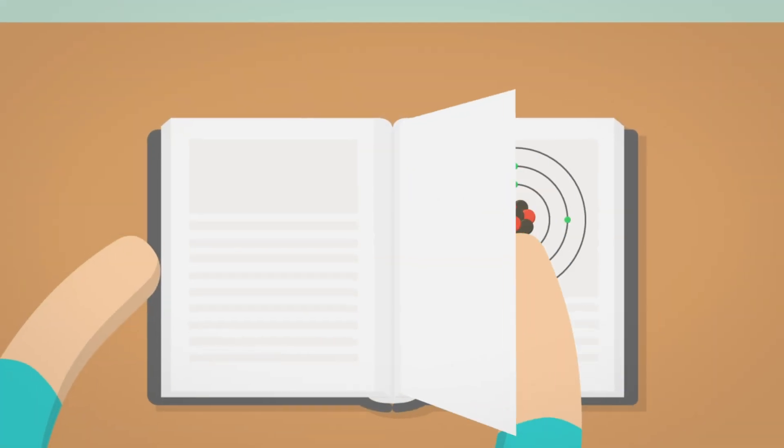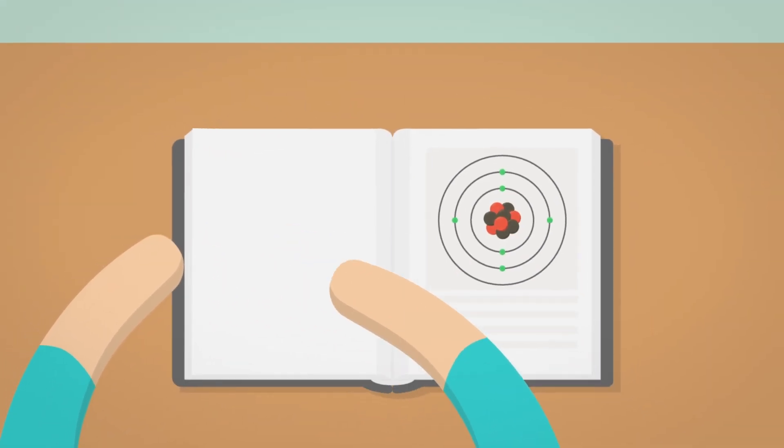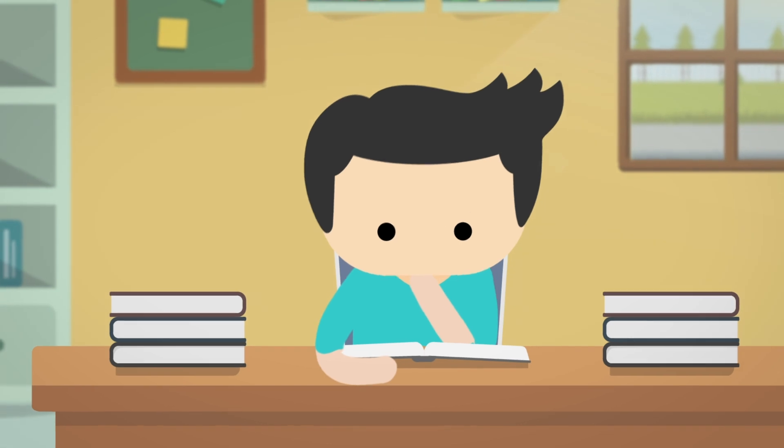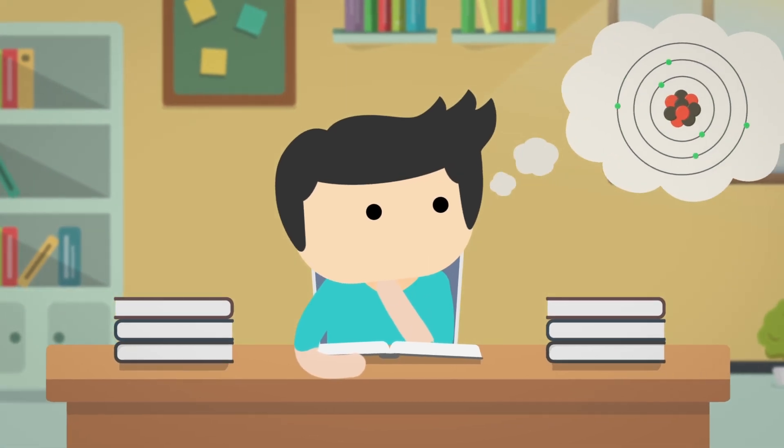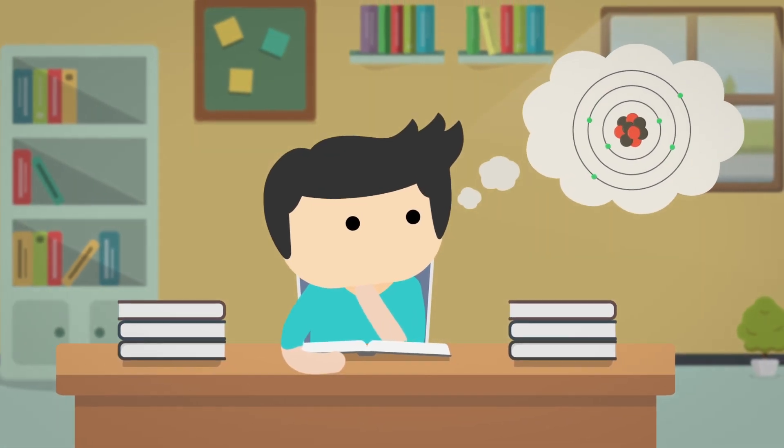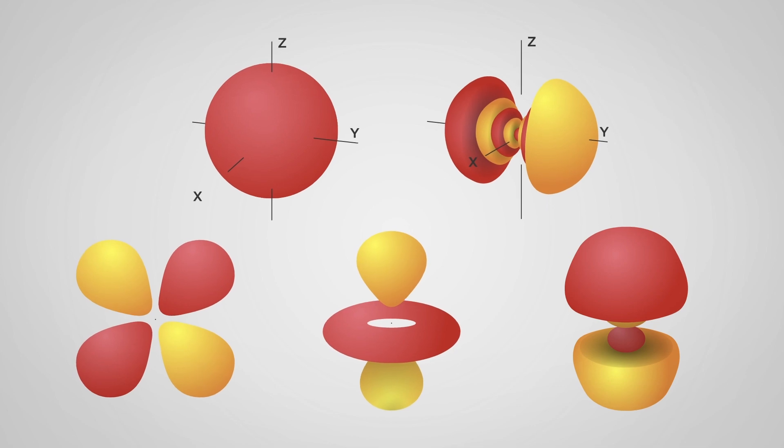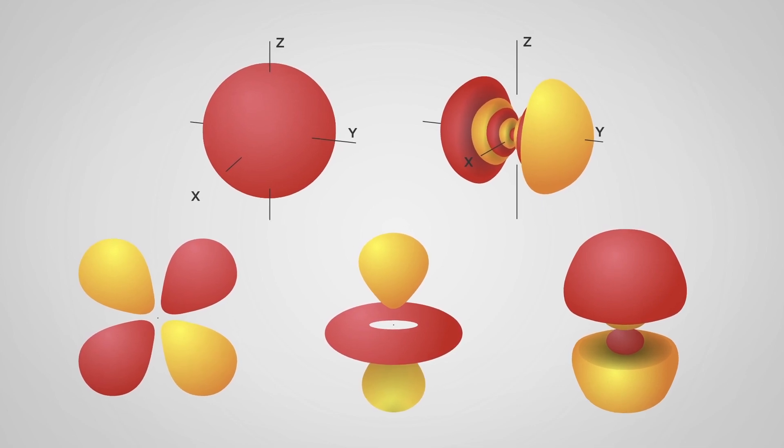From school we know that atoms are super small, but if someone asks, how small exactly? It's hard to picture. In textbooks, they're drawn like the sun and planets, but the real shape is way weirder and they're way, way, way smaller.